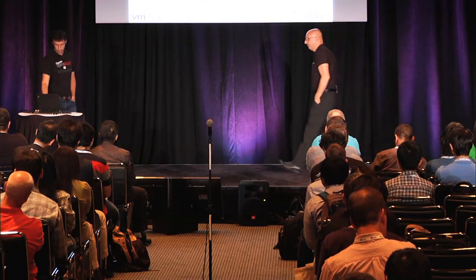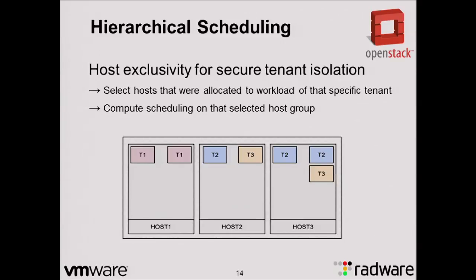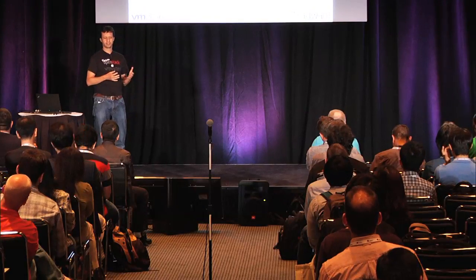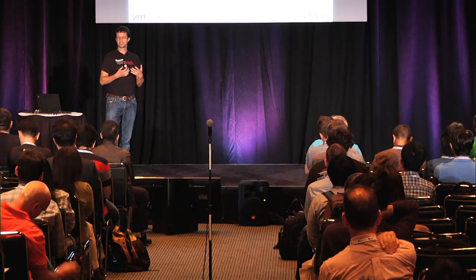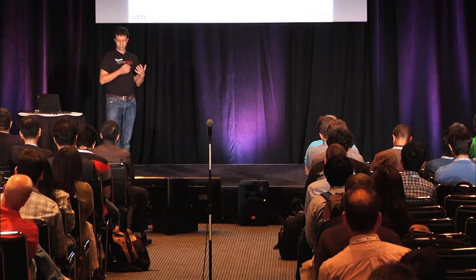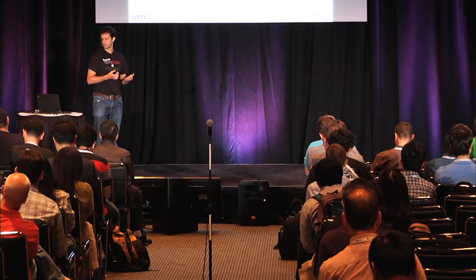An additional example is hierarchical scheduling. We want to show how to use host exclusivity for secure tenant isolation. Through Neutron, one can have network isolation so each tenant runs traffic on its own networks. But what if a host is compromised — one VM could access another VM through a backdoor. An additional level of security is host isolation: tenant one can only run its instances on a specific host, while tenant two and tenant three share their hosts. Tenant one then has compute security — in addition to network isolation, it also has host isolation, enabling a more robust and secure environment.